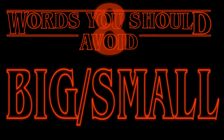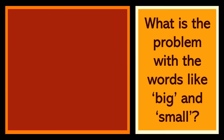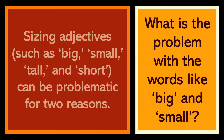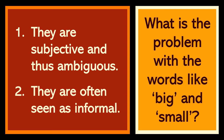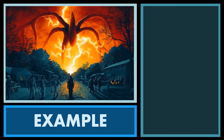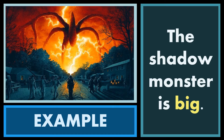Words you should avoid — Chapter 8: Big and Small. What is the problem with words like big and small? Well, sizing adjectives such as big, small, and tall can be problematic for two reasons: first, they are subjective and therefore ambiguous; second, they often seem informal in a lot of contexts. Example: 'The shadow monster is big.'